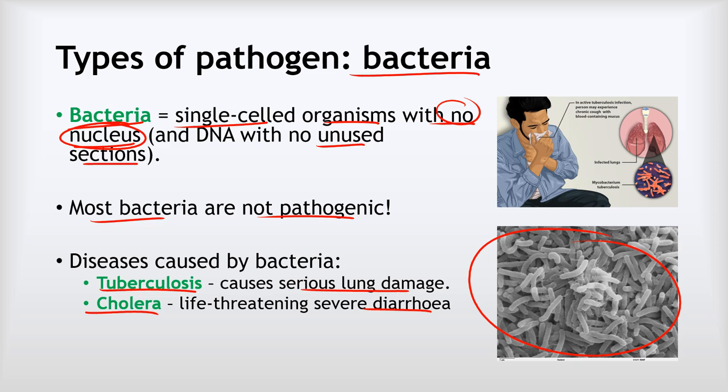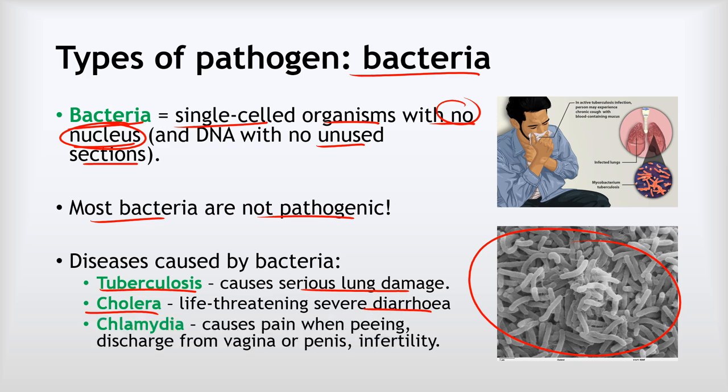Deaths from cholera are about 80,000 per year but variable — outbreaks tend to occur when earthquakes damage water and sewage systems. The last bacterial disease we need to know about is chlamydia. Chlamydia won't kill you for the most part, but it has symptoms like pain when urinating, an unpleasant discharge from the vagina or penis, and infertility. In the UK alone, there are around 200,000 cases per year and the number is increasing rapidly.